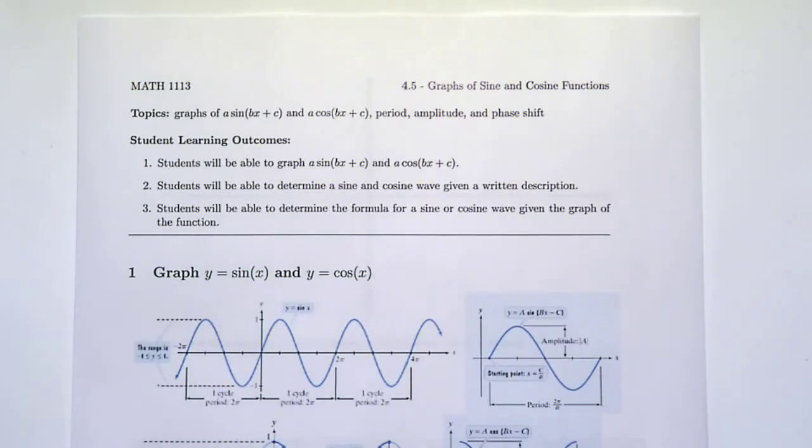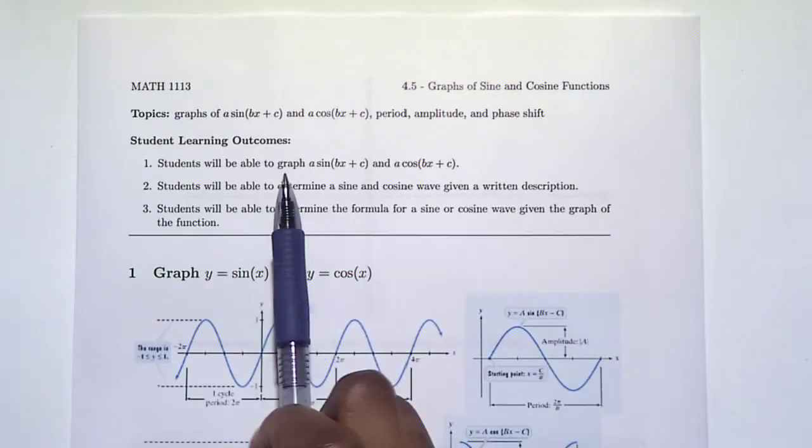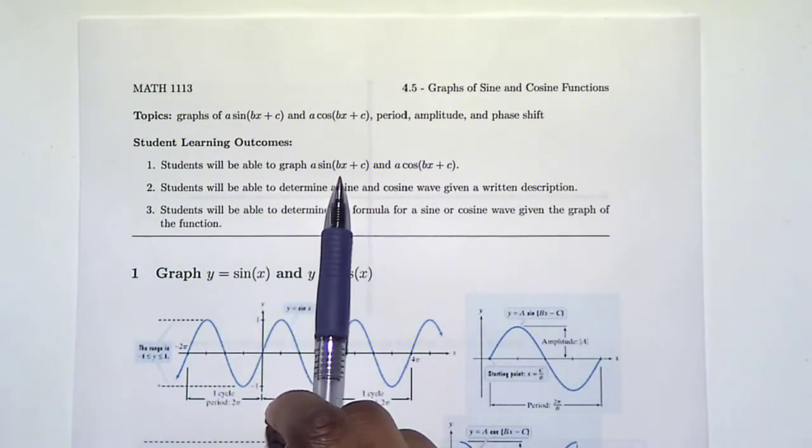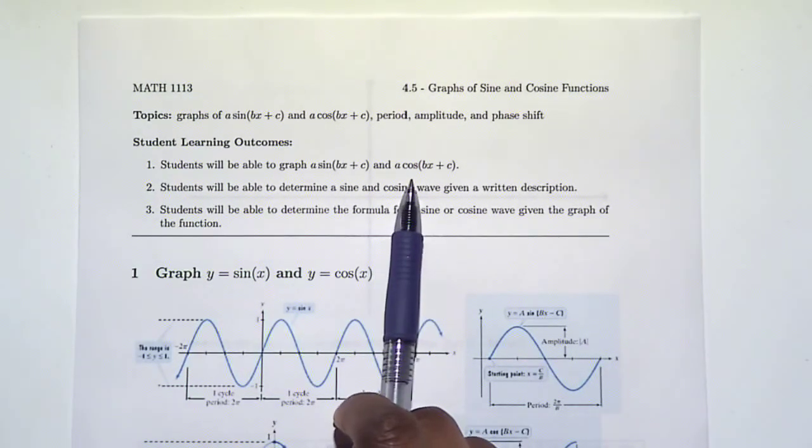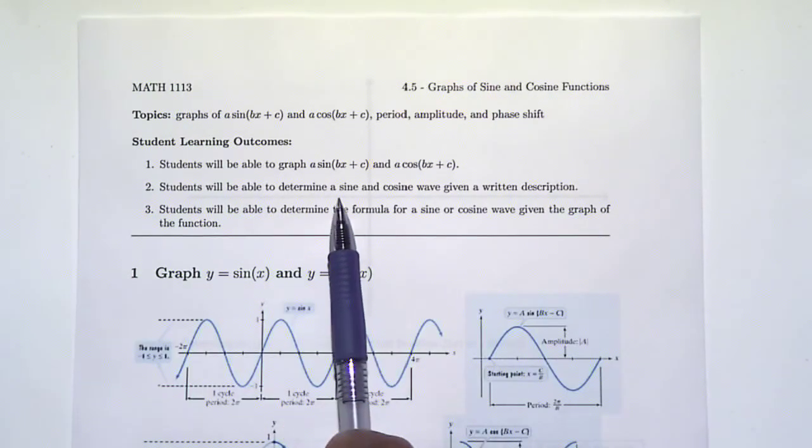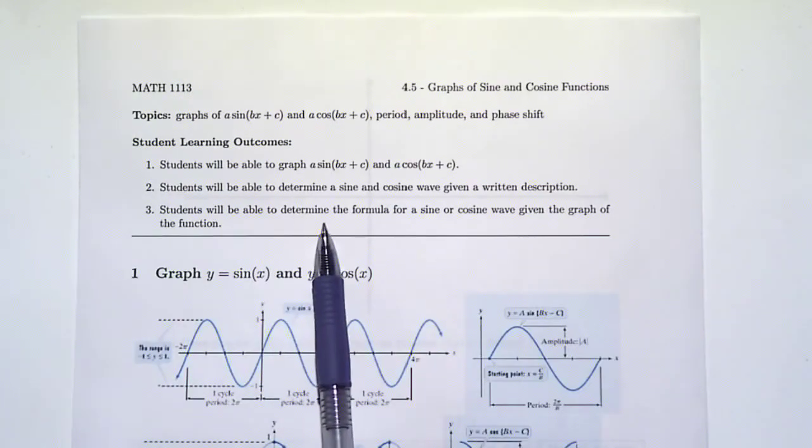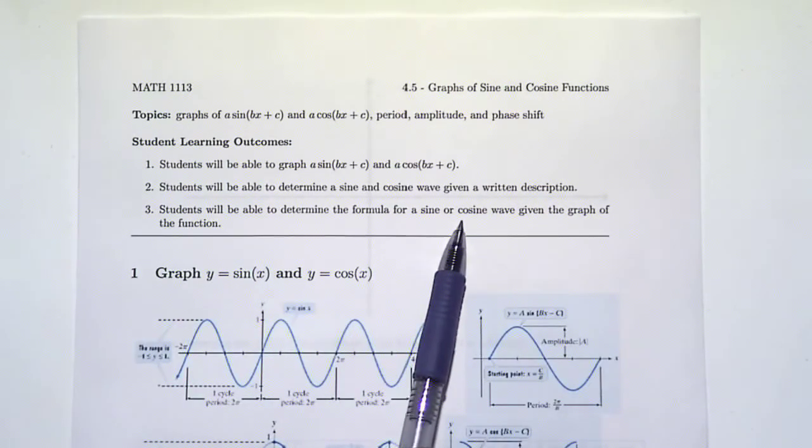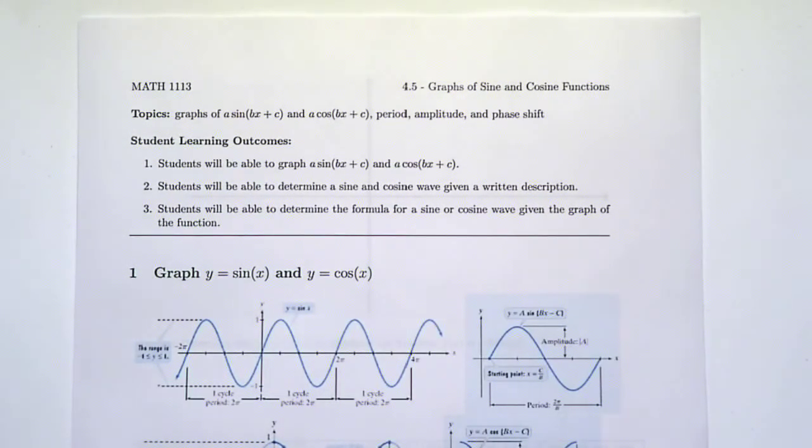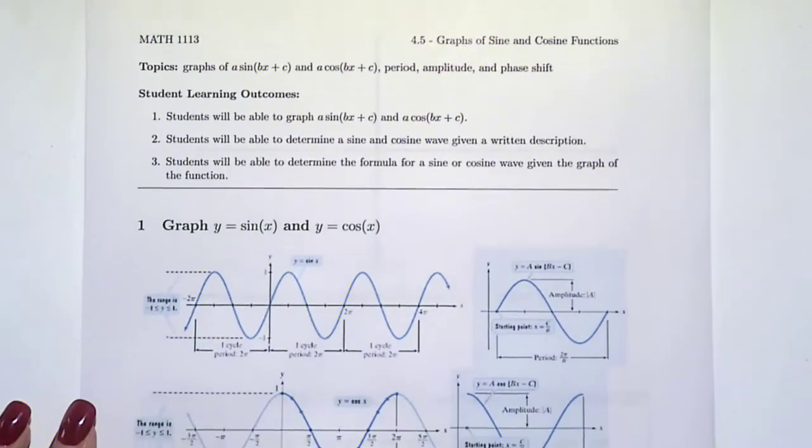In this section you'll be able to graph functions like this, sine graphs as well as cosine graphs. You'll be able to determine a sine and cosine wave given a written description, and you'll also be able to determine a formula for a sine or cosine wave given the graph. We're going to learn everything we need to know about graphs of sine and cosine.